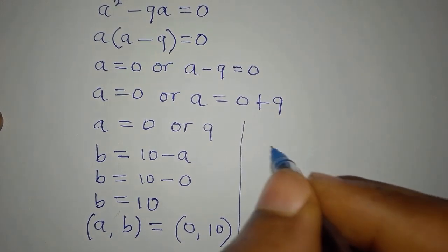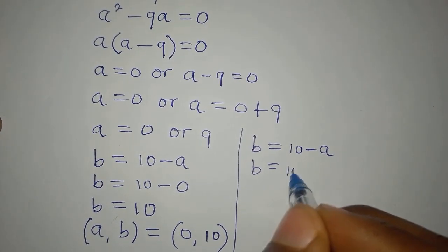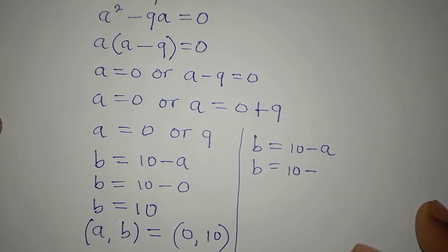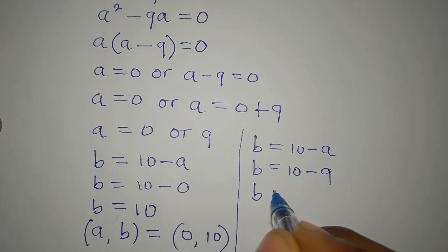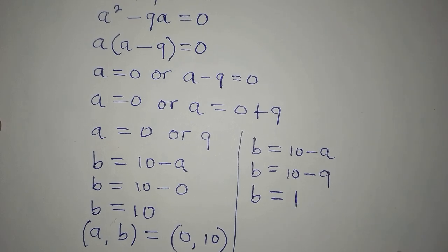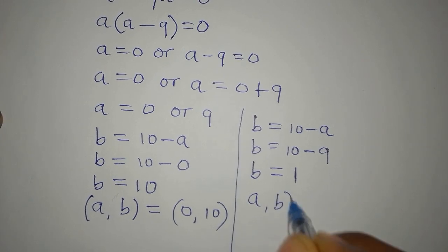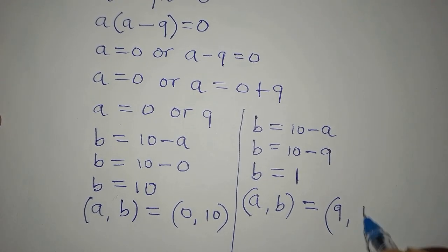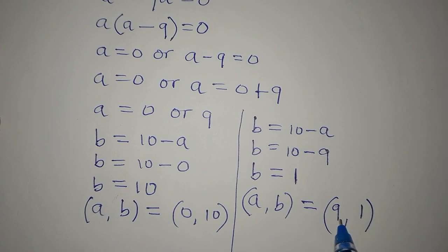Now for the second value, B is still 10 minus A. With A equals 9, B equals 10 minus 9, which equals 1. So our second solution (A, B) is (9, 1). This means when A equals 9, B equals 1. We will now verify these solutions.